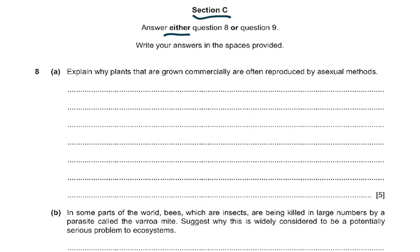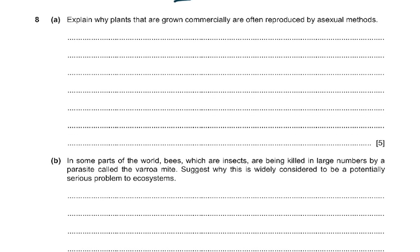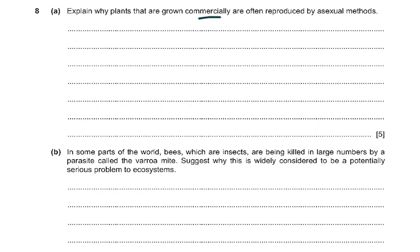Section C — you have a choice. Question 8a: explain why plants grown commercially are often reproduced by asexual methods. Key reasons: only mitosis is involved with one parent, so all offspring are genetically identical clones. Artificial selection is under human control. Desirable features such as tall sugarcane for higher crop yield are reproduced consistently. It can be done throughout the year without waiting for seasons, flowers, seeds, or pollinators, and it is faster than waiting for seed formation and germination.